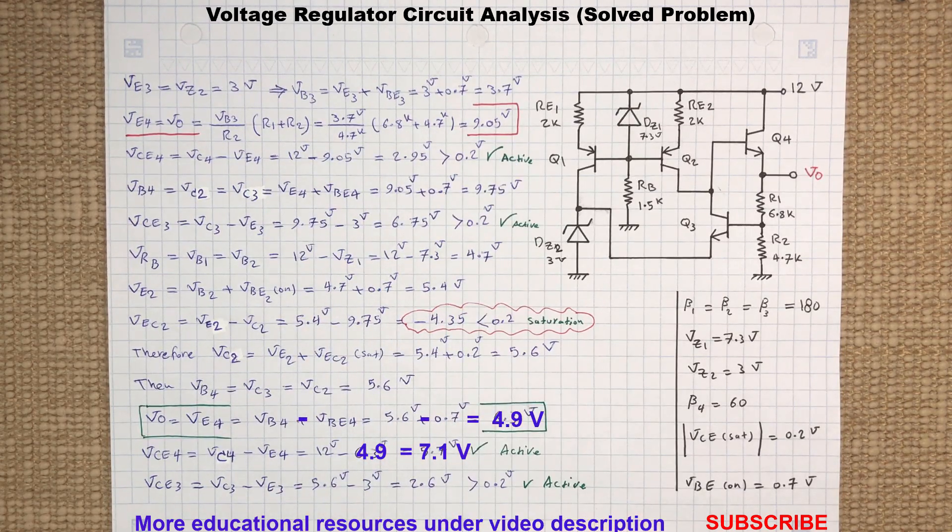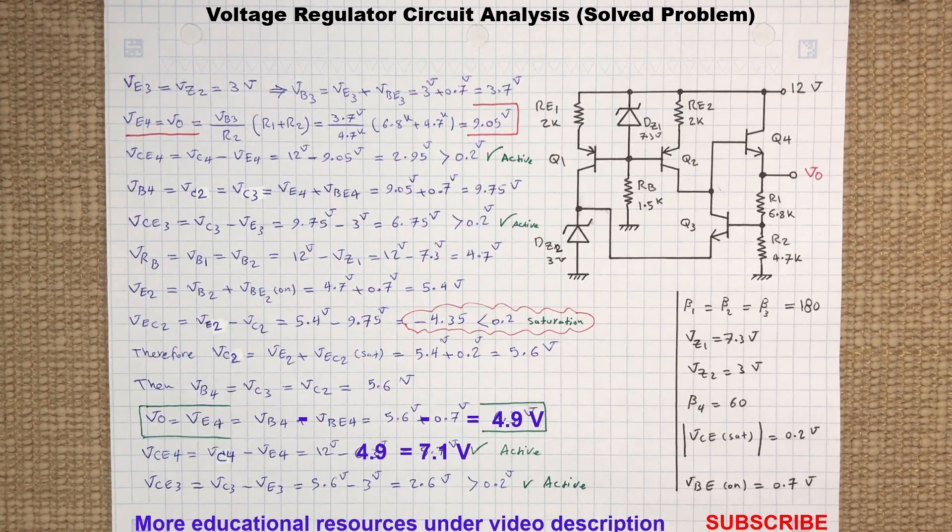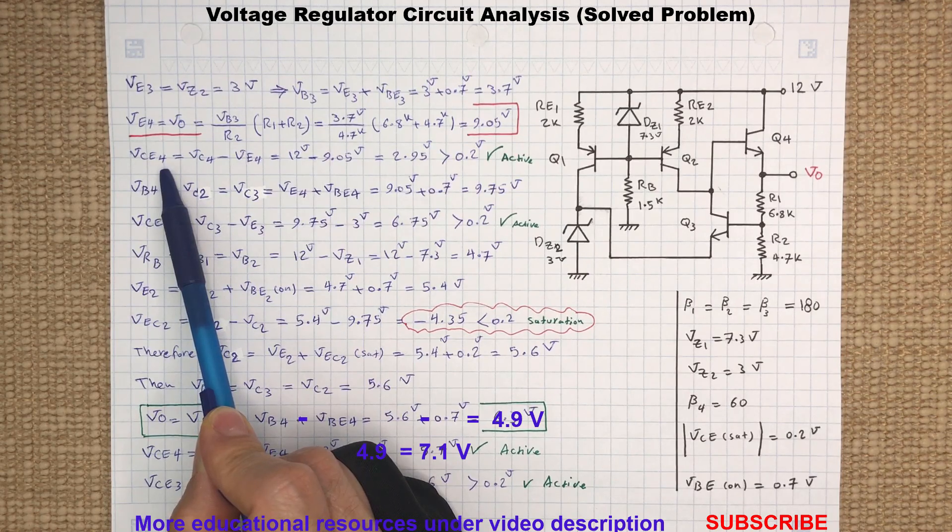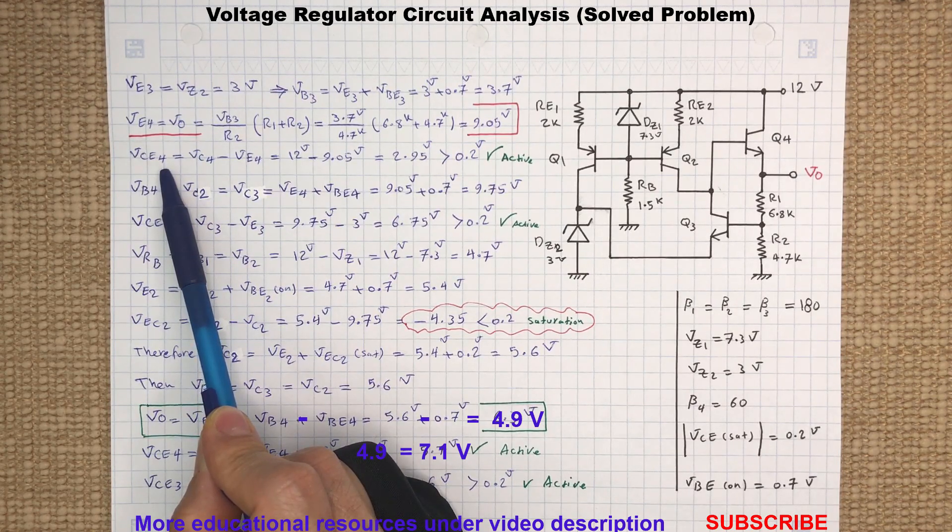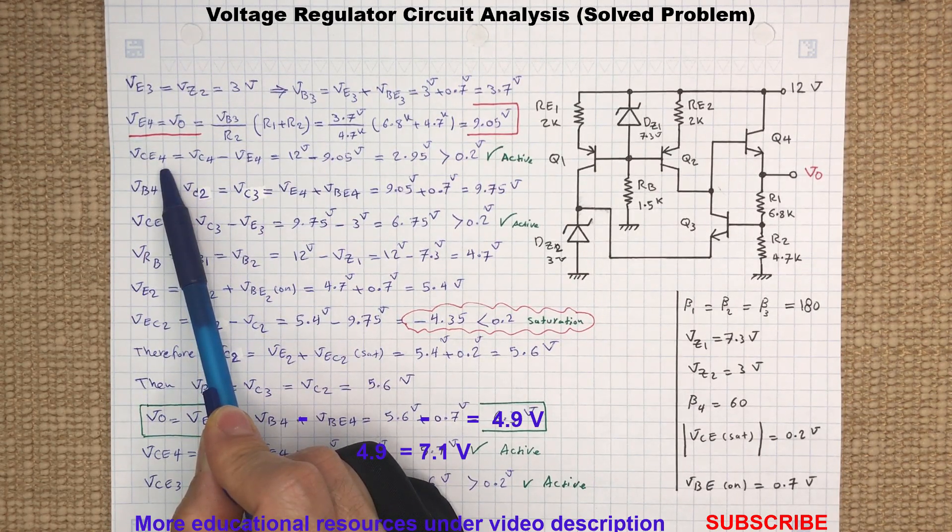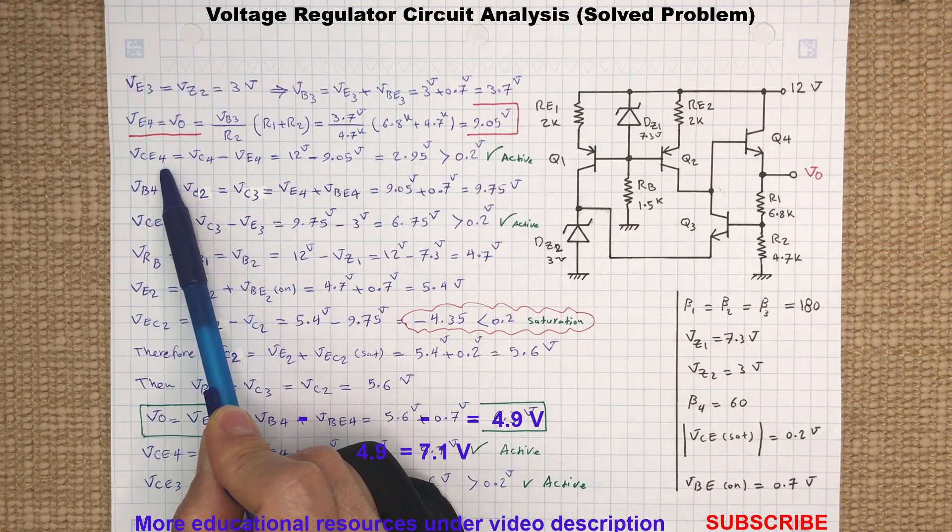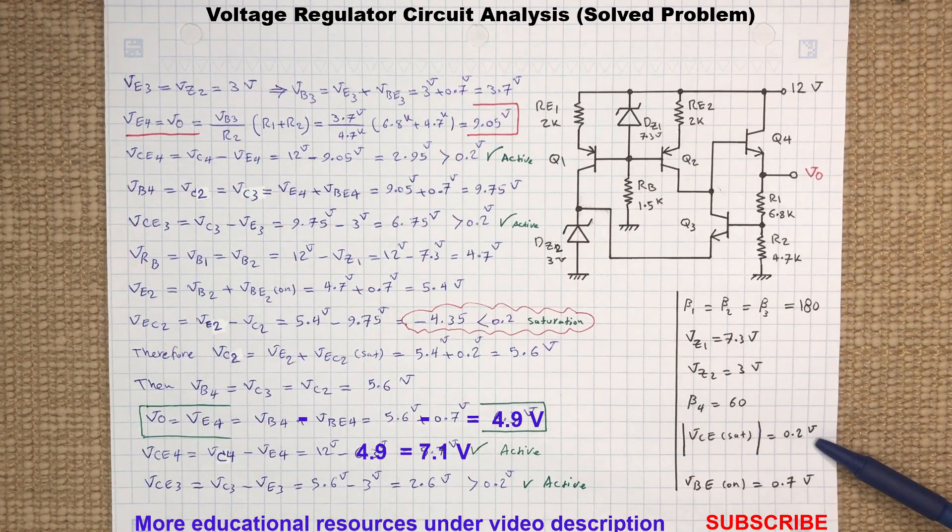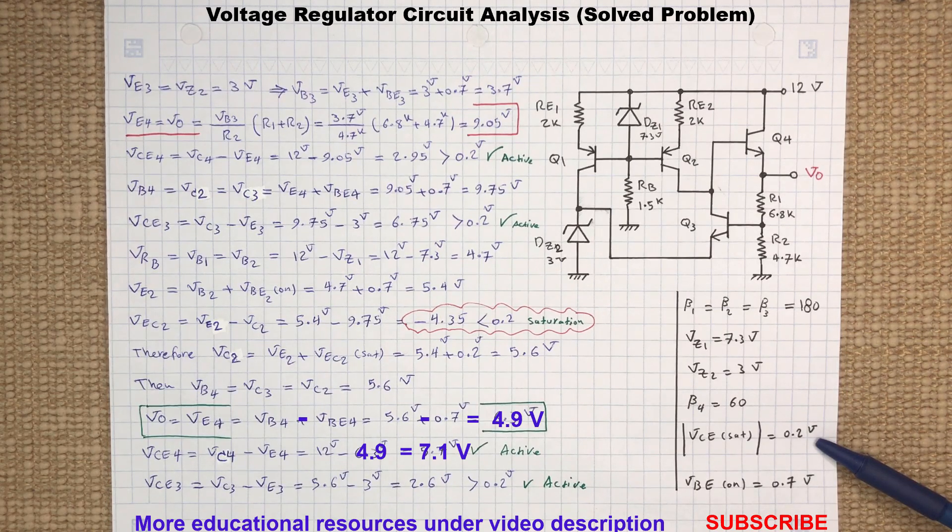Our calculation could stop here if we were sure all the transistors in this circuit are in active region, but we require to verify that before assuming the output voltage is actually 9.05 volts. For Q4, it is easy to verify if it is in active region since VCE of 4 is greater than 0.2 volts—the 0.2 volts is the collector-emitter saturation voltage defined by the problem here.